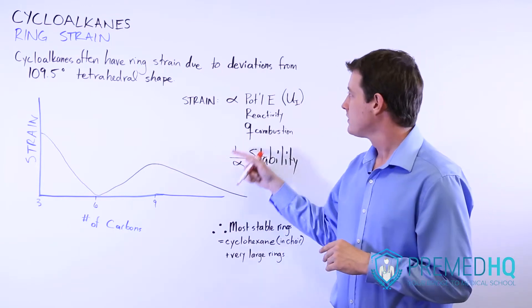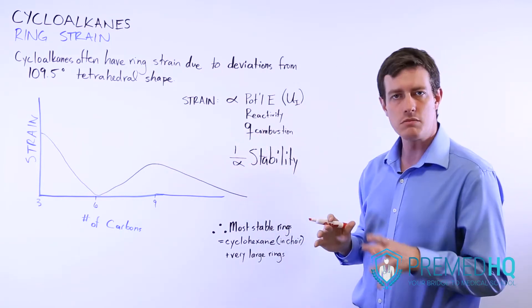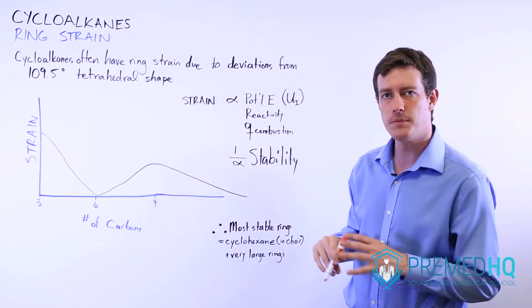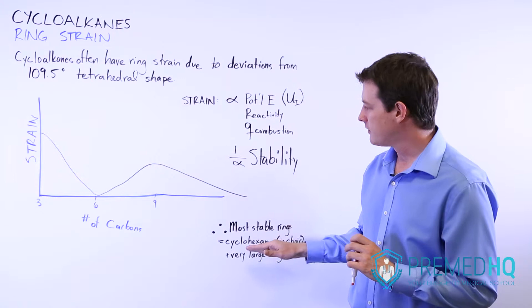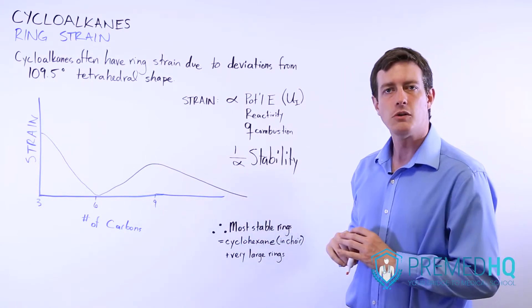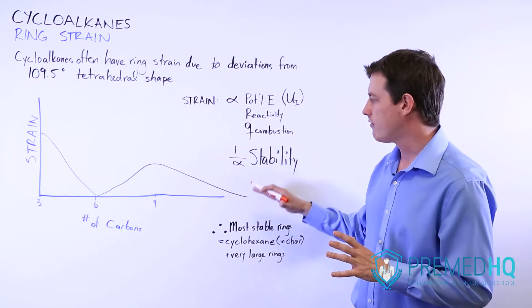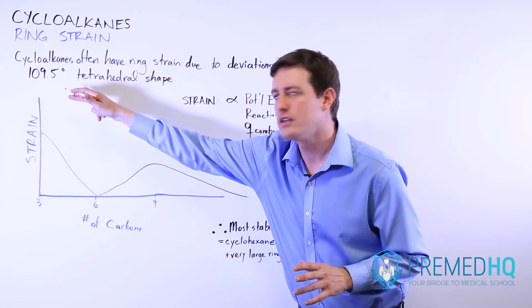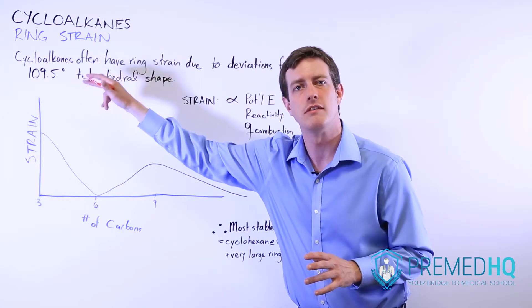And notice also that ring strain is inversely proportional to the stability. So something like cyclohexane is very stable. And another thing that's very stable is very large ringed cycloalkanes. Those are two things that have very little strain because they're not deviating much from that ideal bond angle of 109.5 degrees.